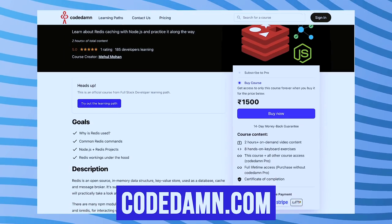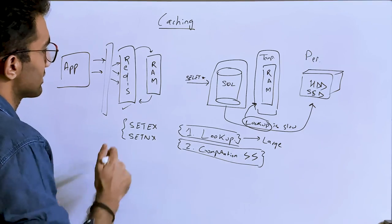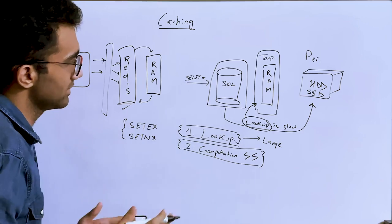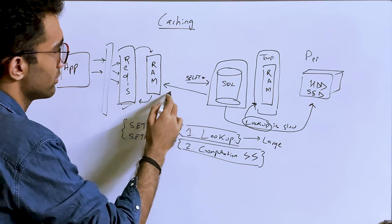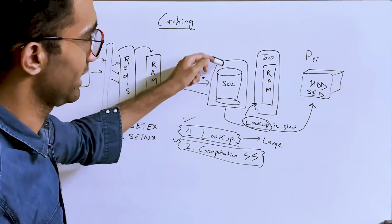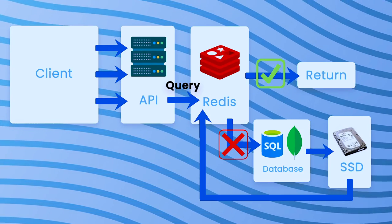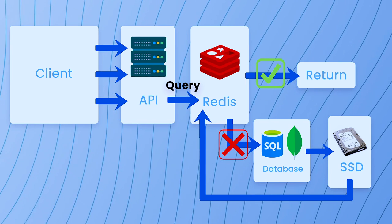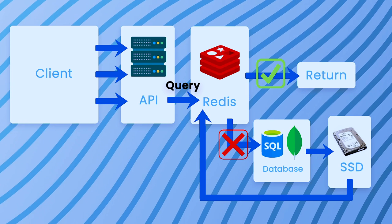In a very simple way, Redis is just RAM — it allows you to store lookup or computation results directly without going through the full database engine and hard disk. An ideal system has a client accessing the API, and the backend first checks Redis for a cached result before hitting the database.